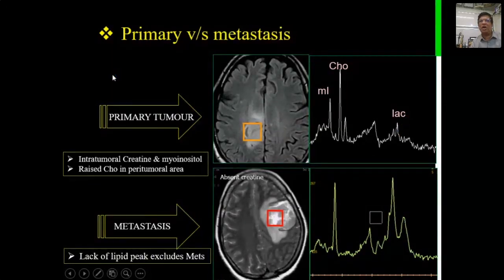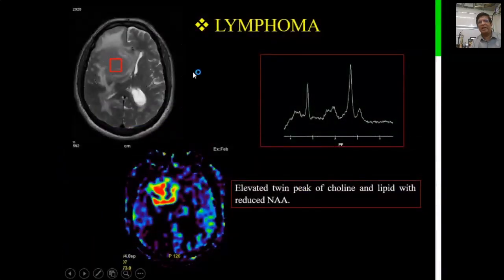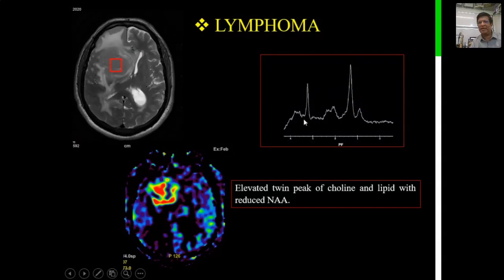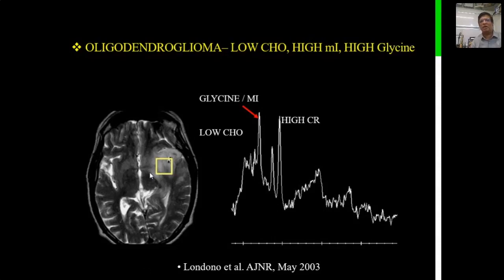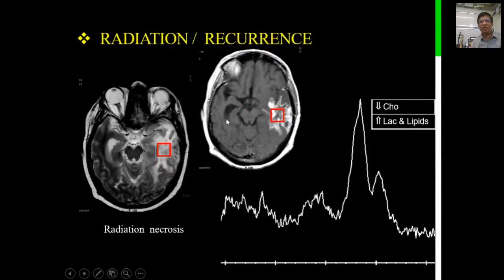Lymphoma can be differentiated from glioma and metastasis by the presence of what is called the twin peak sign — two tall peaks of lipid-lactate and choline indicate lymphoma. Oligodendroglioma, on the other hand, will have relatively low choline, high creatine, and high myoinositol-glycine — noting that glycine and myoinositol cannot be separated because both resonate at the same location. If the tumor is mainly in gray matter with an infiltrative pattern, you are dealing with oligodendroglioma. Radiation necrosis can be differentiated from tumor recurrence by a tall lipid-lactate peak from 0.9 to 1.3 ppm with relatively low choline.